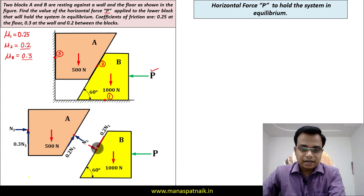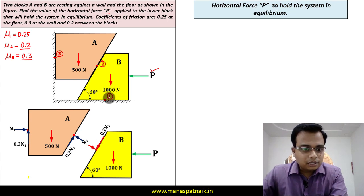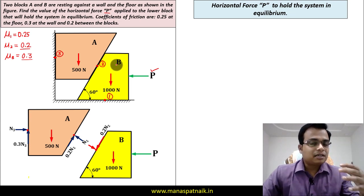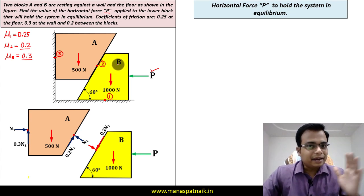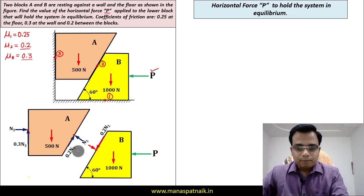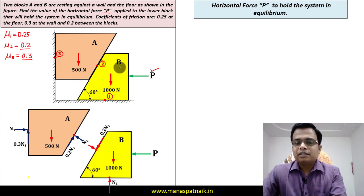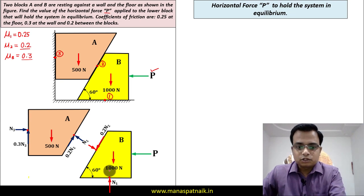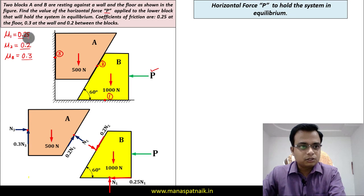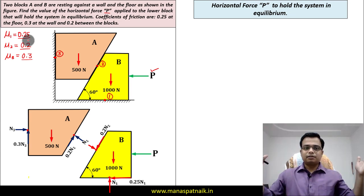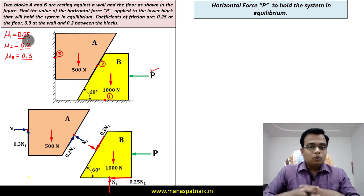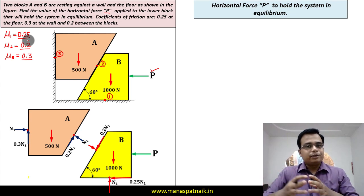At point of contact 1, block B's natural tendency is towards the right hand side, so the normal N1 acts upward and friction acts towards the left: μ1·N1 = 0.25·N1. All the forces have now been worked out, and the only thing remaining is to apply the equations of equilibrium.